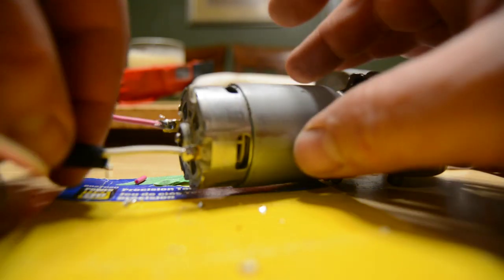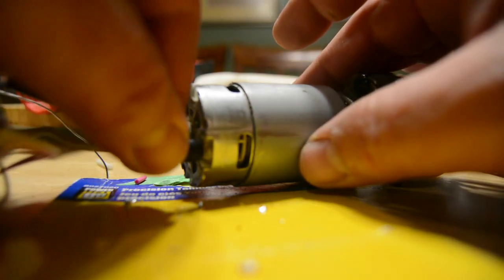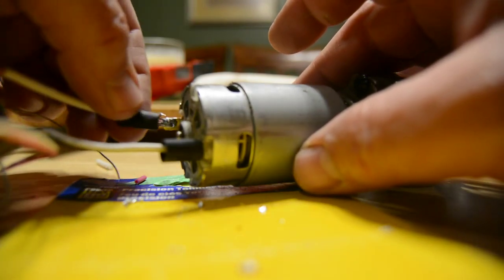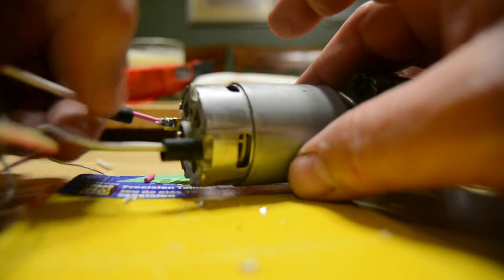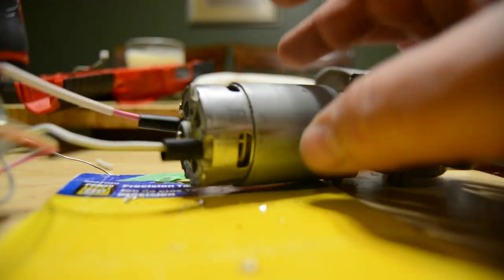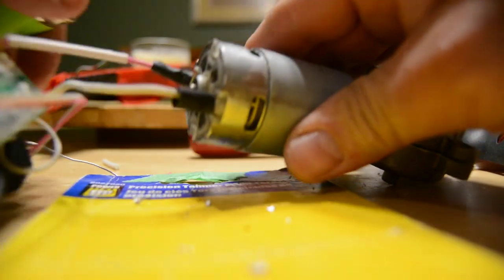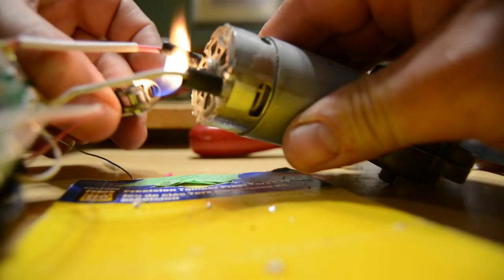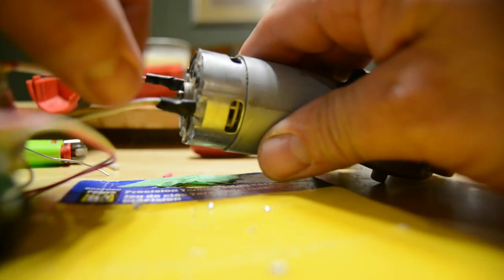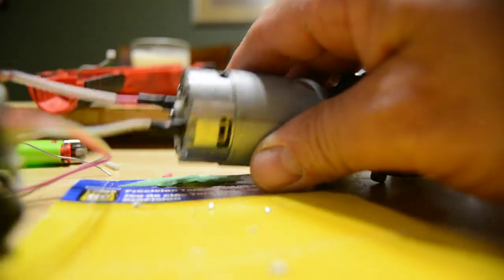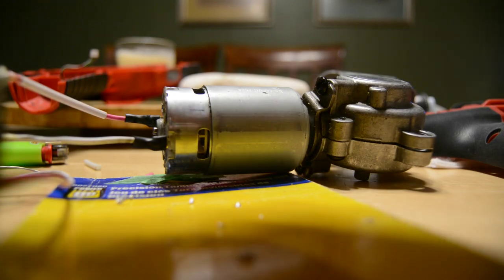All done. Now we're just going to put the shrink wrap over top like this. Alright. Here's my lighter. Here. Do the shrink wrap. Like so. Perfect.